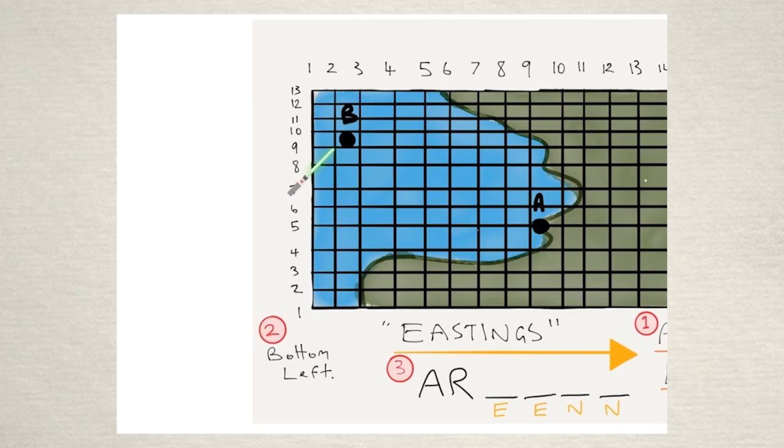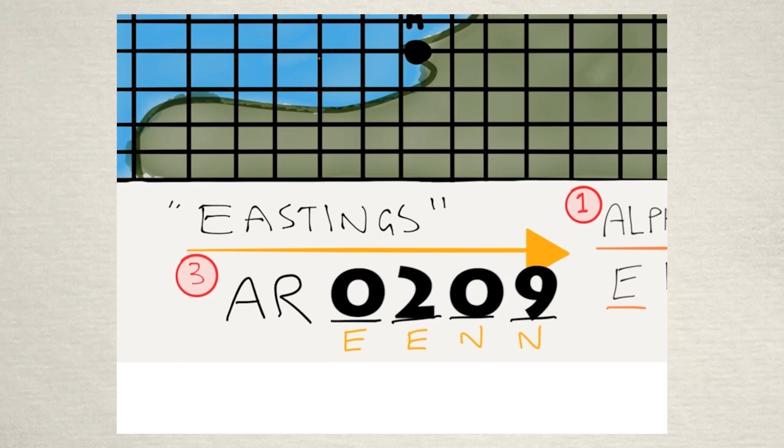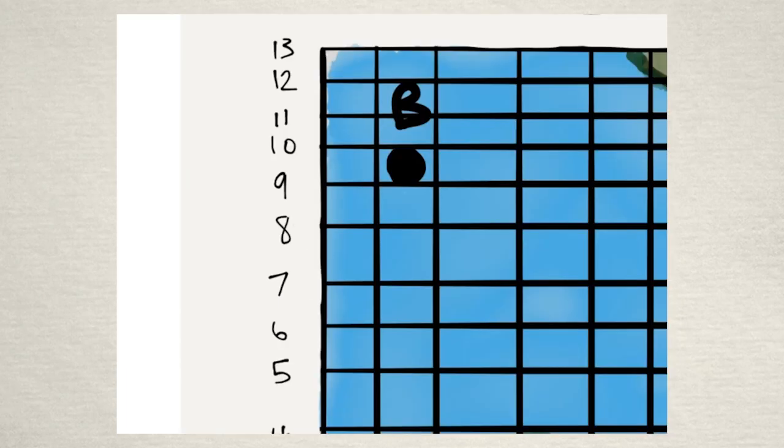And so what we end up with is AR for area reference 0209, easting then northing. Note that it's always seen in the bottom left of the area. Okay so we're looking at 0209 bottom left.